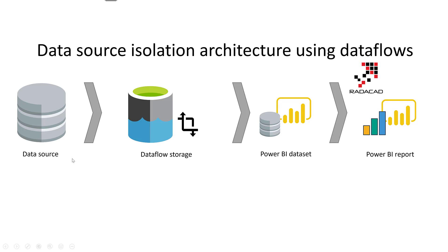Basically, this data flow is getting data from the data source. This data source can be a SQL Server database, it can be Excel files in a SharePoint folder, it can be basically anything. This data flow layer can be just loading data as it is — like partial data — or it can even be doing some transformation, filtering data, aggregating data. Then Power BI datasets get data from that, and Power BI reports connect to the Power BI dataset.